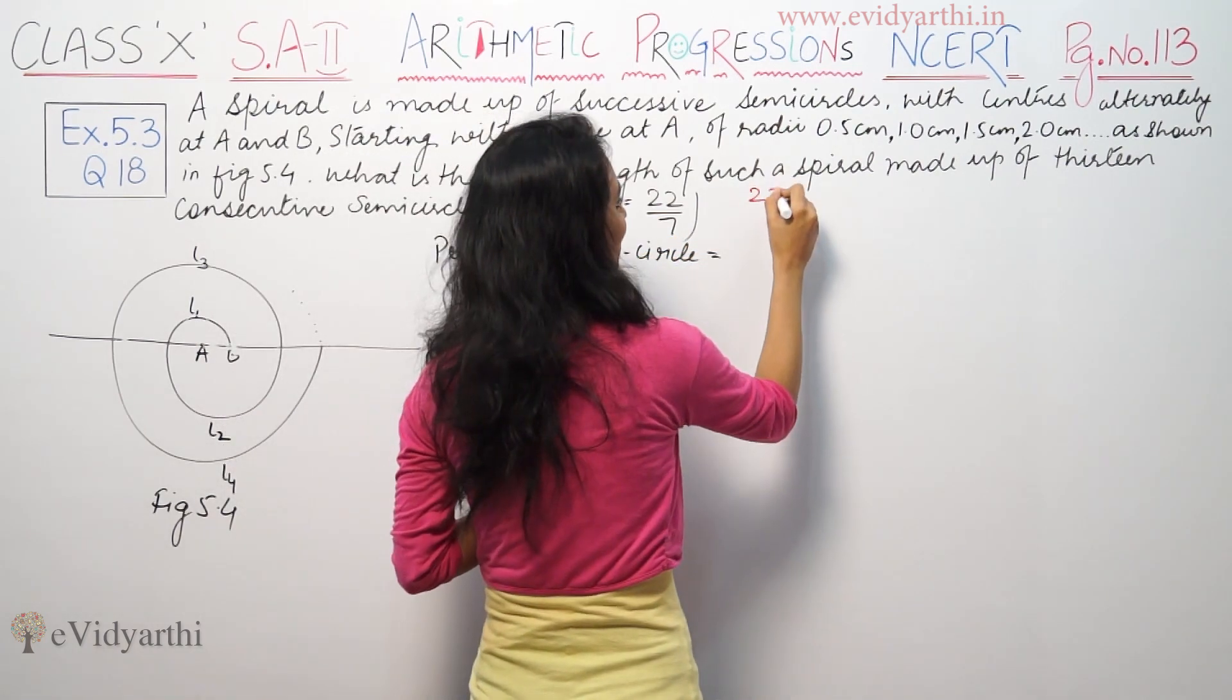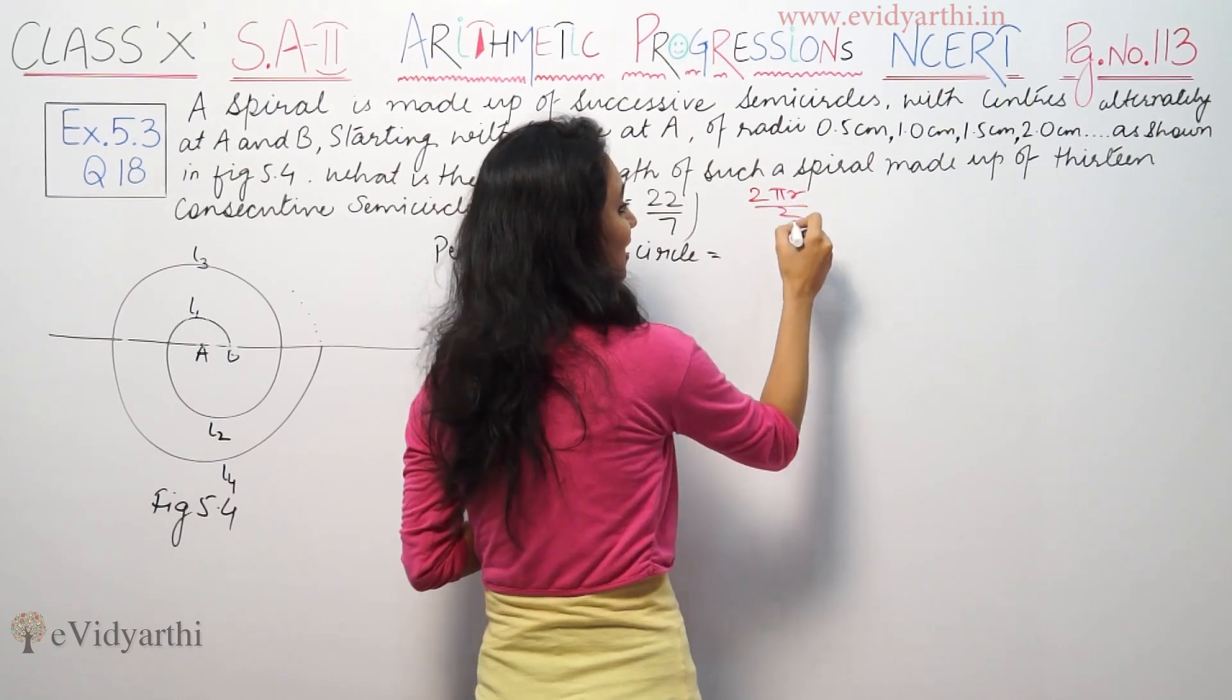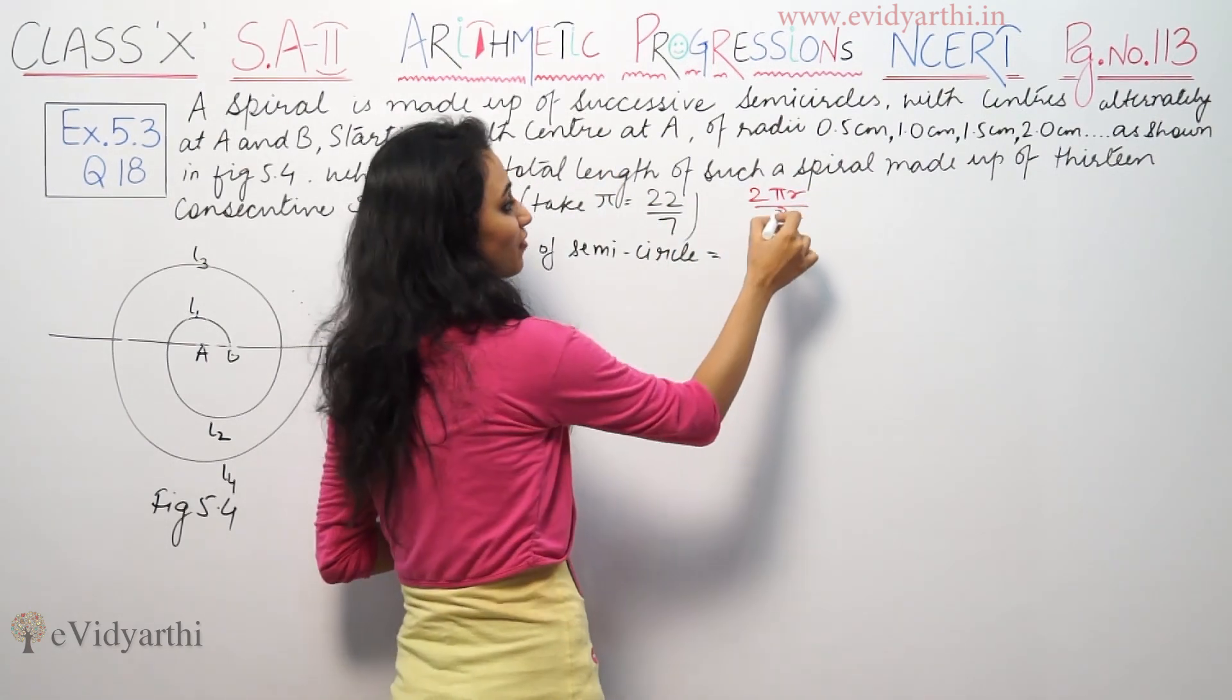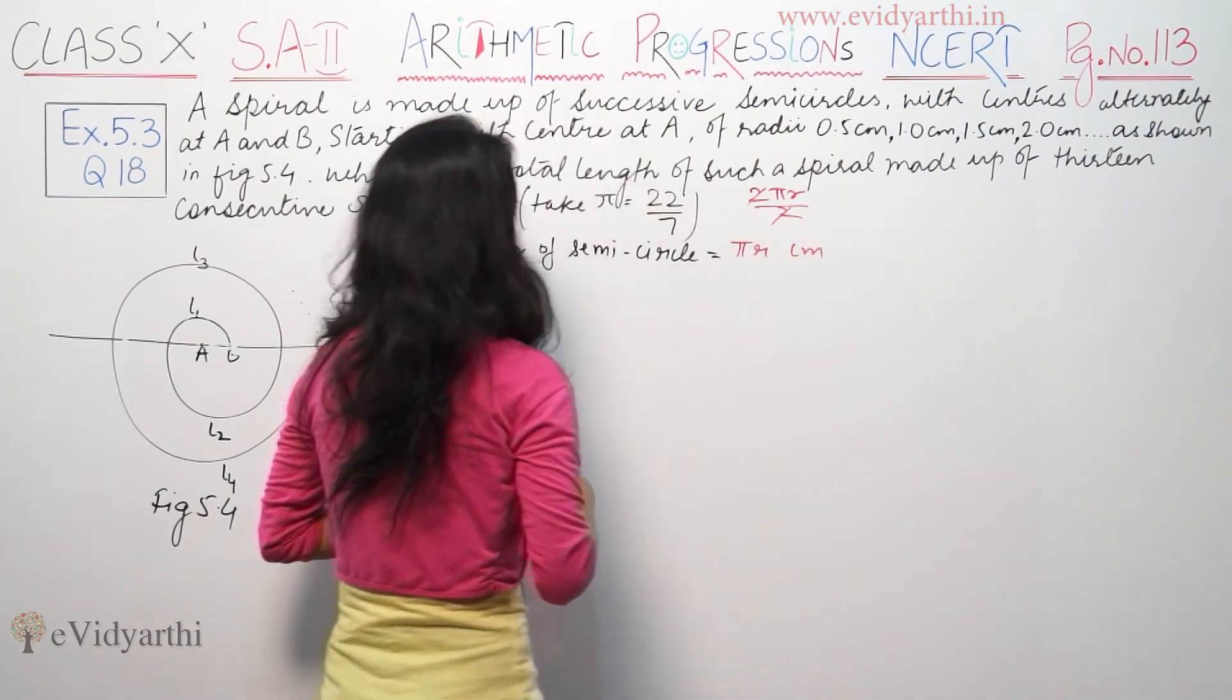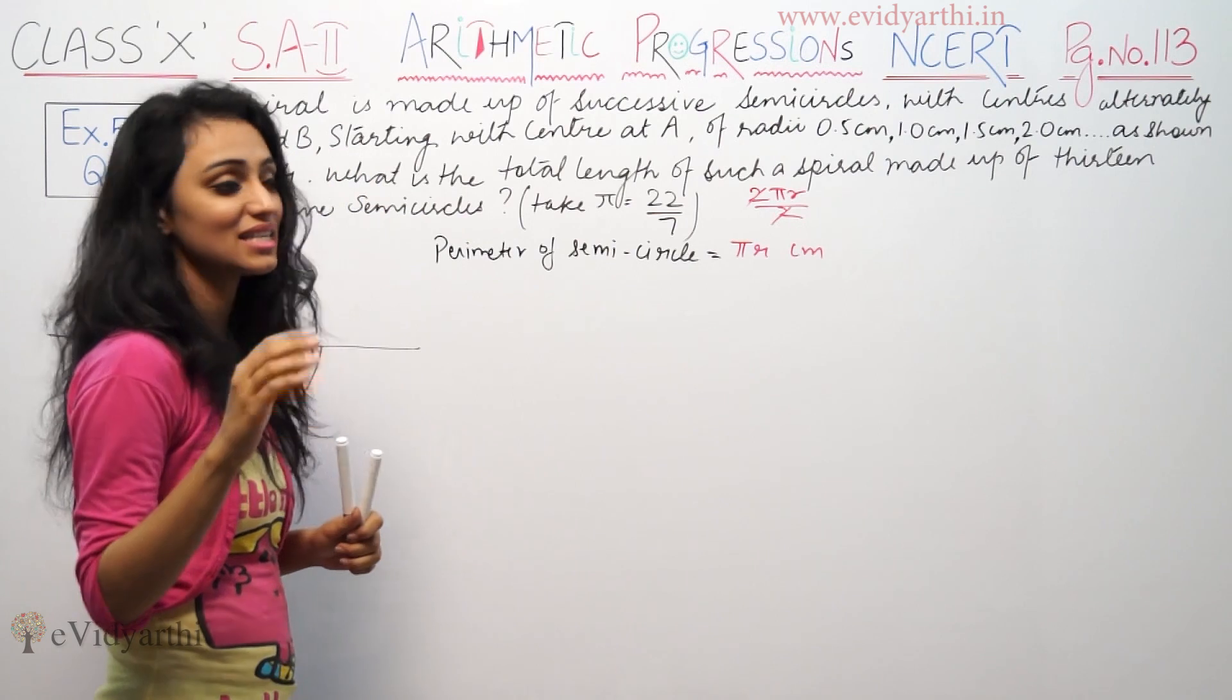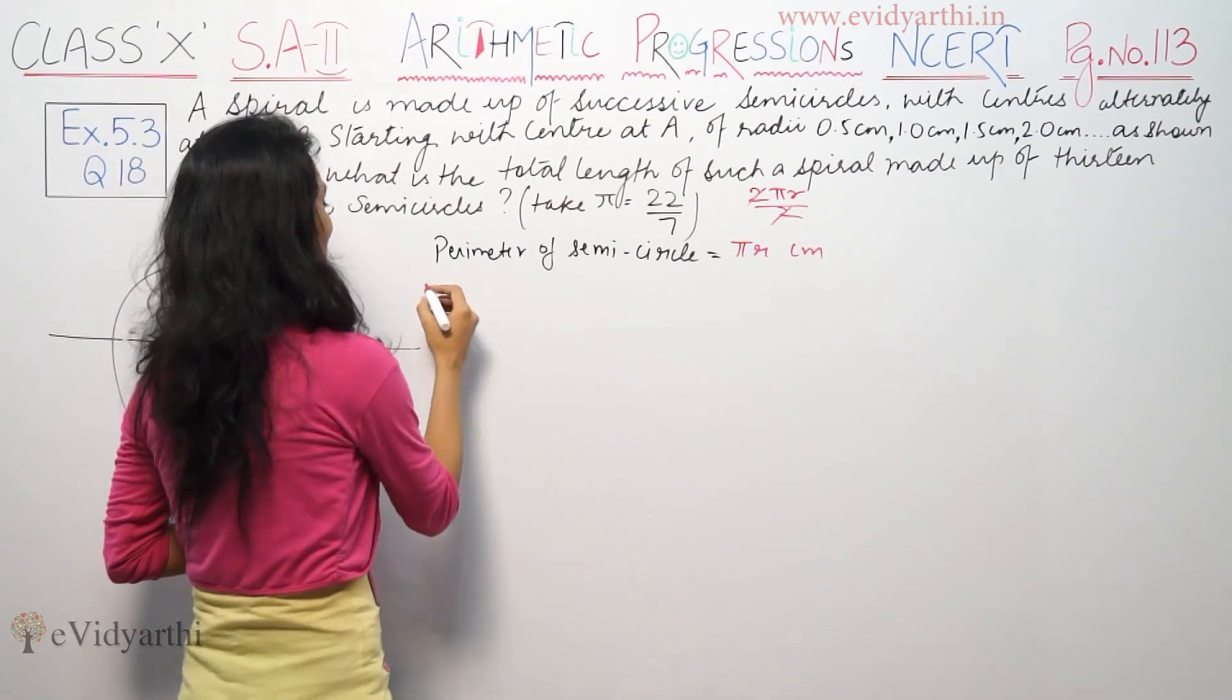The circle perimeter is 2πR. For semicircle we need half, so half divided, then we have the formula πR. Now let's take a look at the first length.